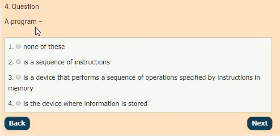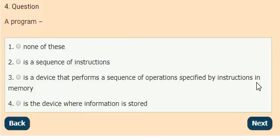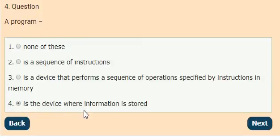Question 4: A program is — options: none of these, it is a sequence of instructions, it is a device that performs a sequence of operations specified by instructions in memory, it is a device where information is stored. The answer is option 4: a program is a device where information is stored.